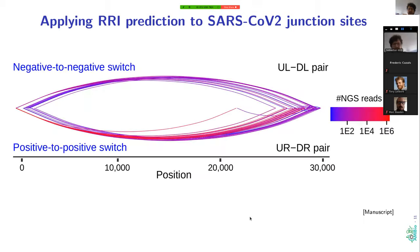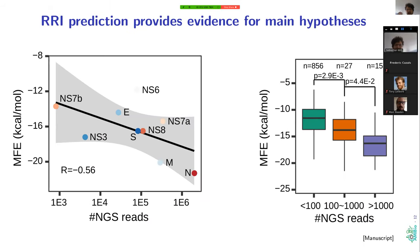The other important hypothesis about the mechanism of template switching is that RNA-RNA interaction plays a critical role, controlling how we get from one junction side to the other via stable RNA-RNA interaction. We can use this bioinformatics analysis to provide additional evidence: for very well-confirmed junction sites, we observe very good stabilities, and stability is nicely correlated with the number of reads confirming our junction sites.